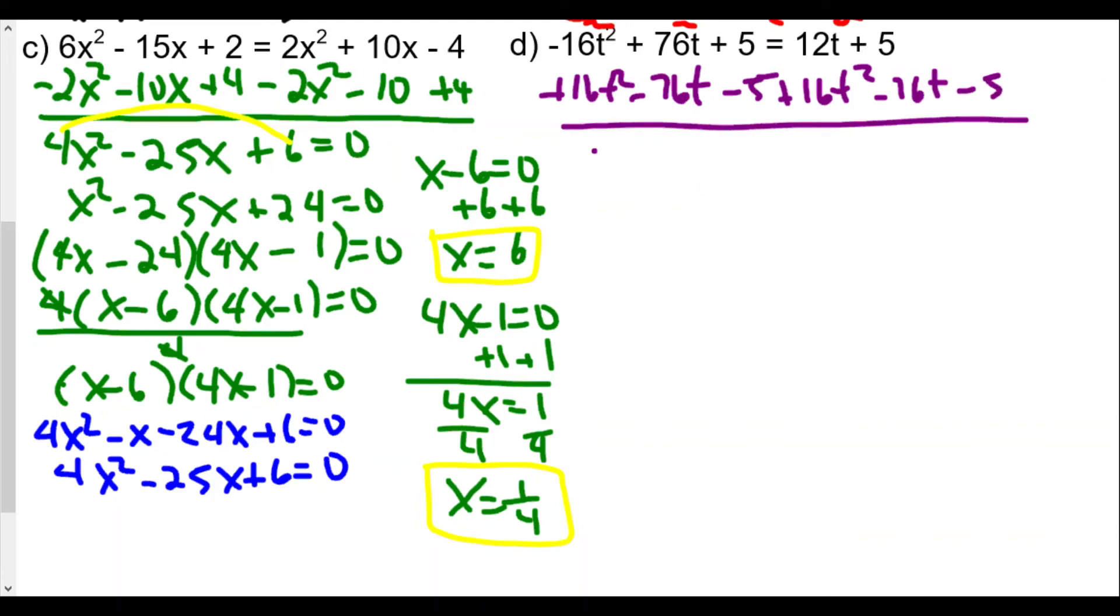On the left side, we have 0. On the right side, we have 16t². The 12t minus 76t should give us 64t plus 64t. And the 5 plus -5 equals 0. Here we only have two terms. We try the greatest common factor, and we see 0 = 16t(t + 4), because 4 times 16 is 64.